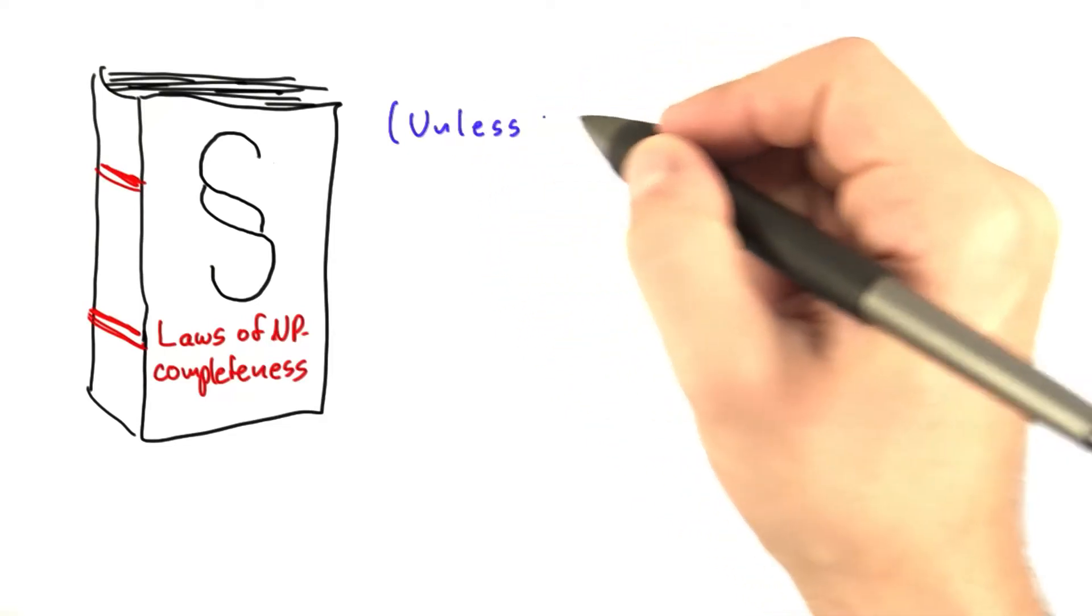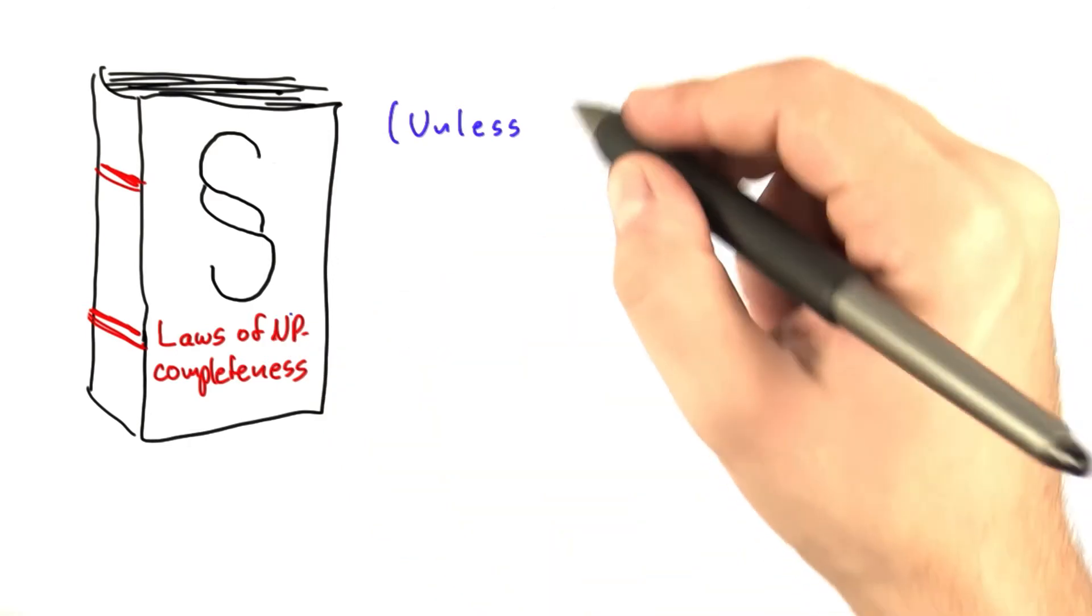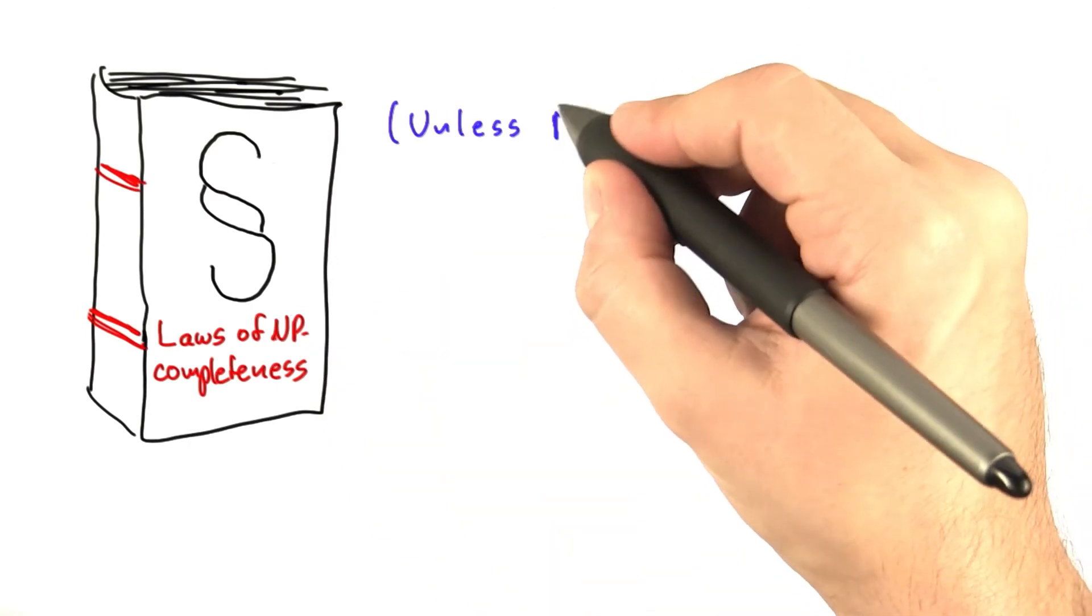So let's have a look back at the laws of NP-completeness. And the laws of NP-completeness is a book that only holds unless P equals NP.